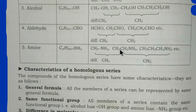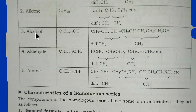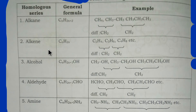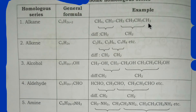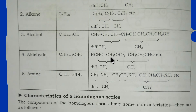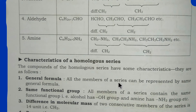Now let's look at the characteristics of a homologous series — whether it is alkane, alkene, alcohol, aldehyde, or amine. The first characteristic is general formula: all members of a series can be represented by the same general formula.